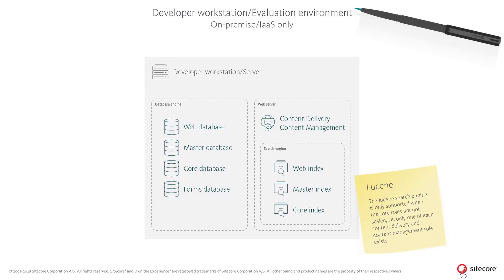As for the search engine, the Sitecore Experience Manager product can use Lucene, which runs in-process on the web server and therefore does not require any other installations on the server or workstation. Lucene is only supported when there is only a single content delivery and content management role in the setup, and is only recommended for evaluation or development environments. Lucene is not supported in Microsoft Azure PaaS and is only supported in on-premise or infrastructure as a service setups. Note that all downloadable on-premise configurations are set to use Solr as the default search engine — please refer to the documentation on how to change this.